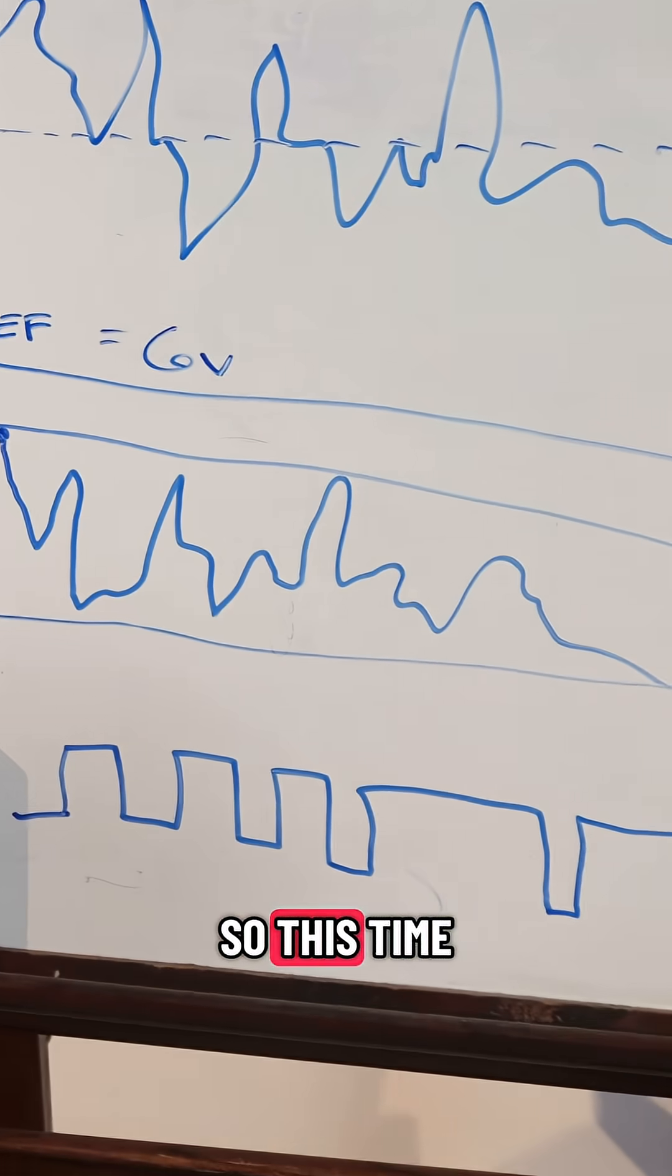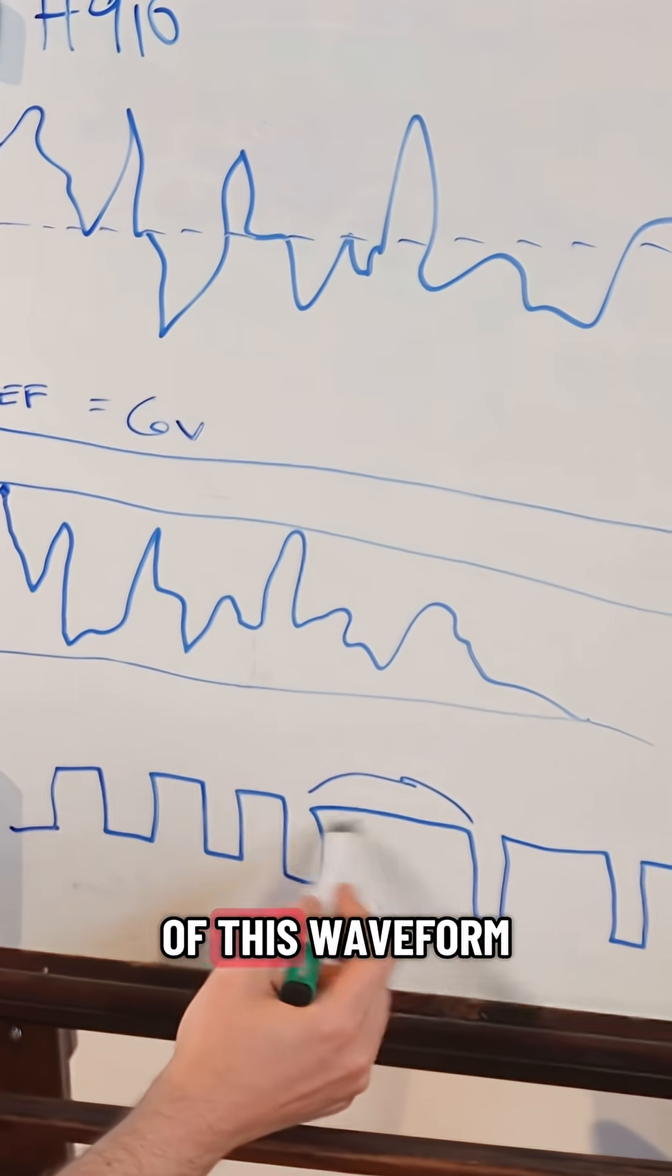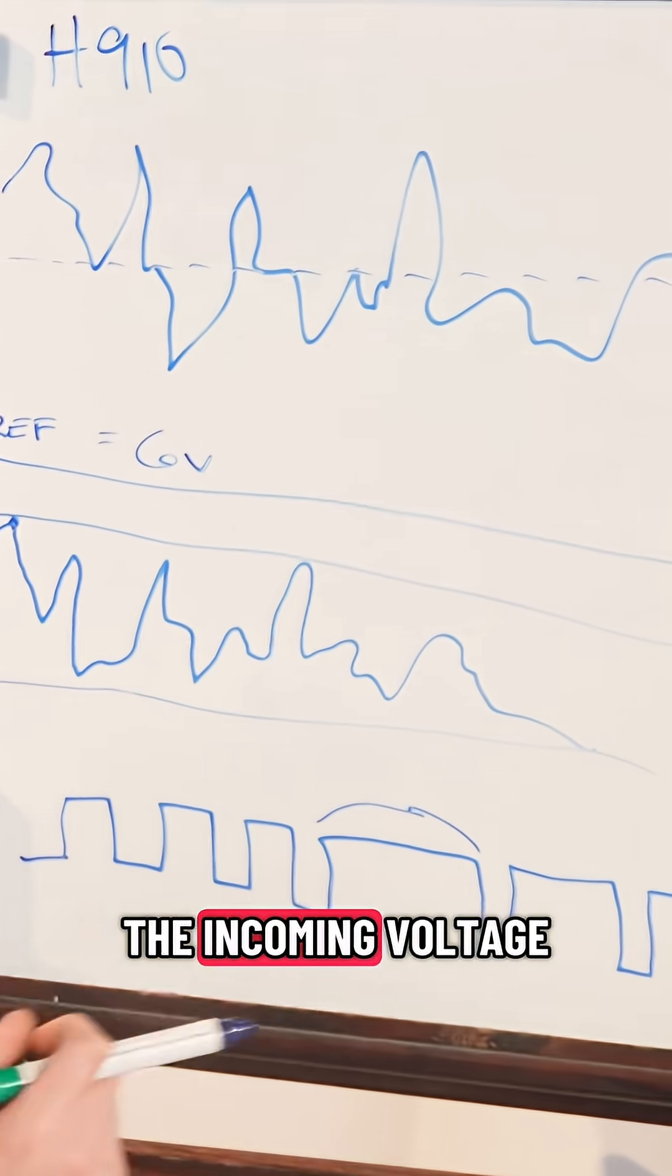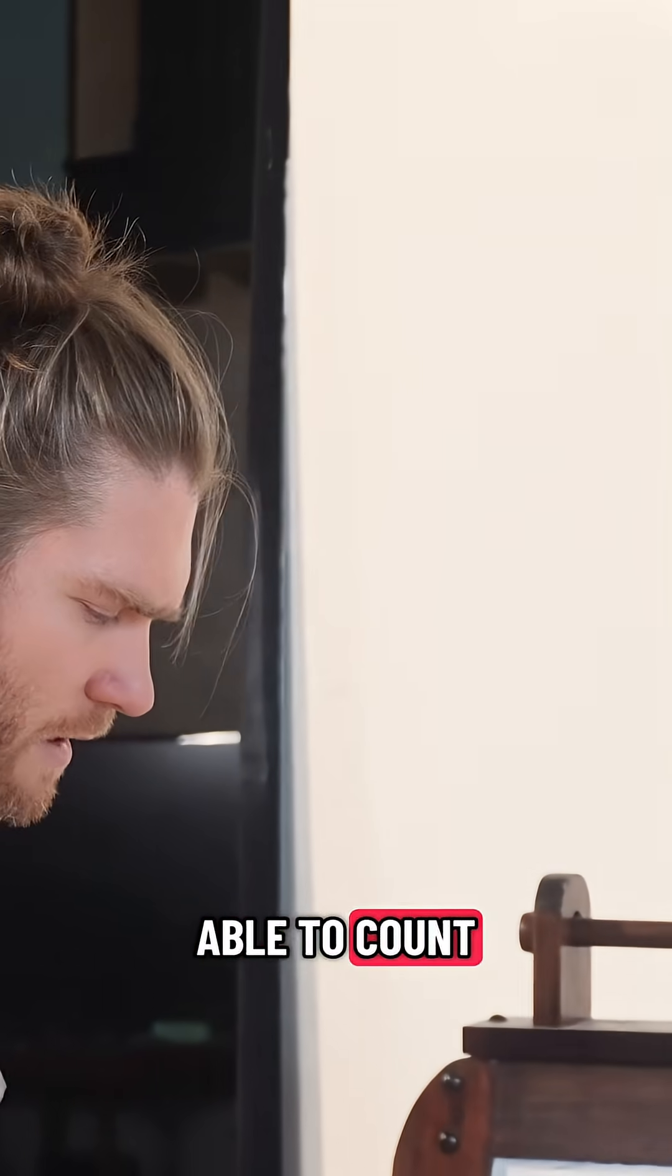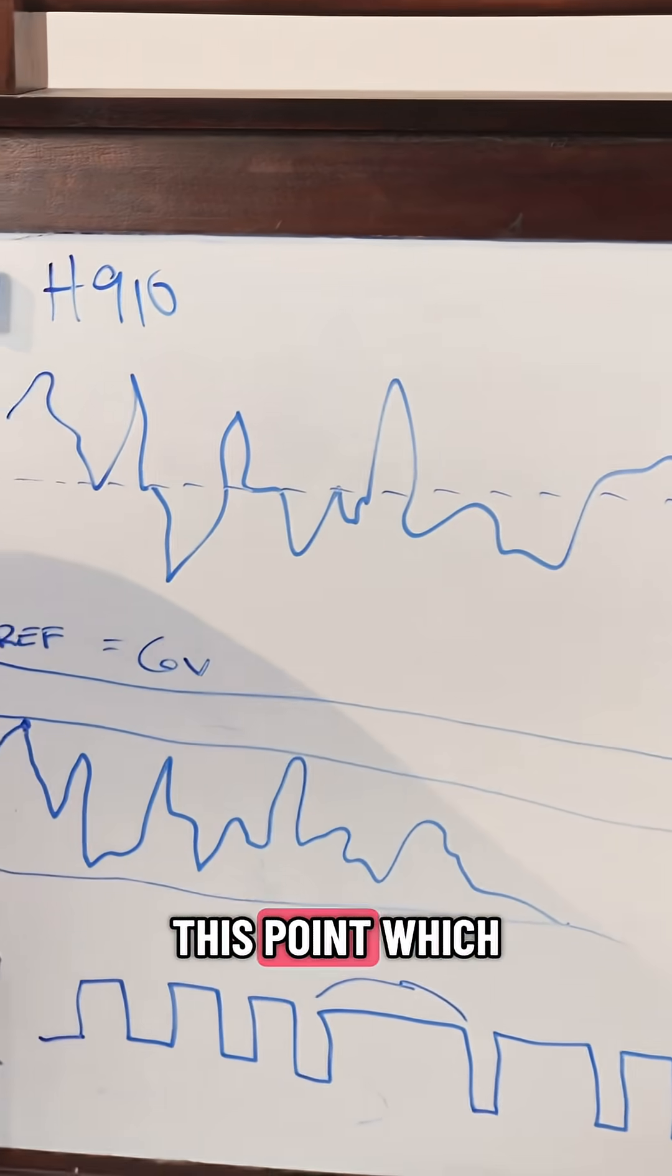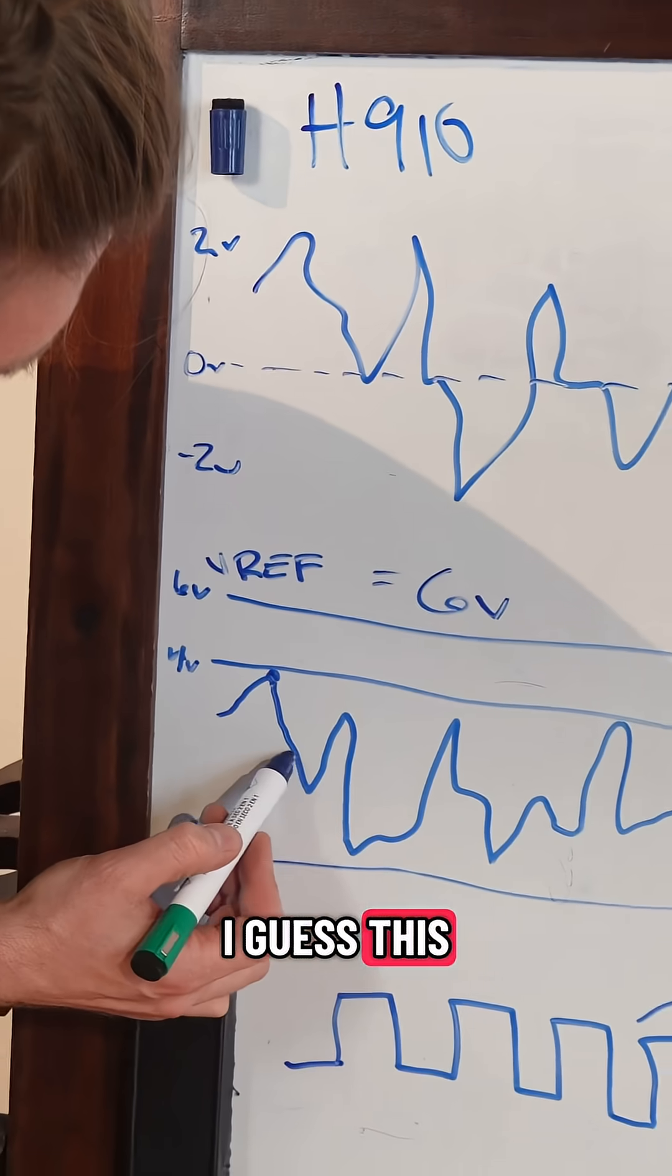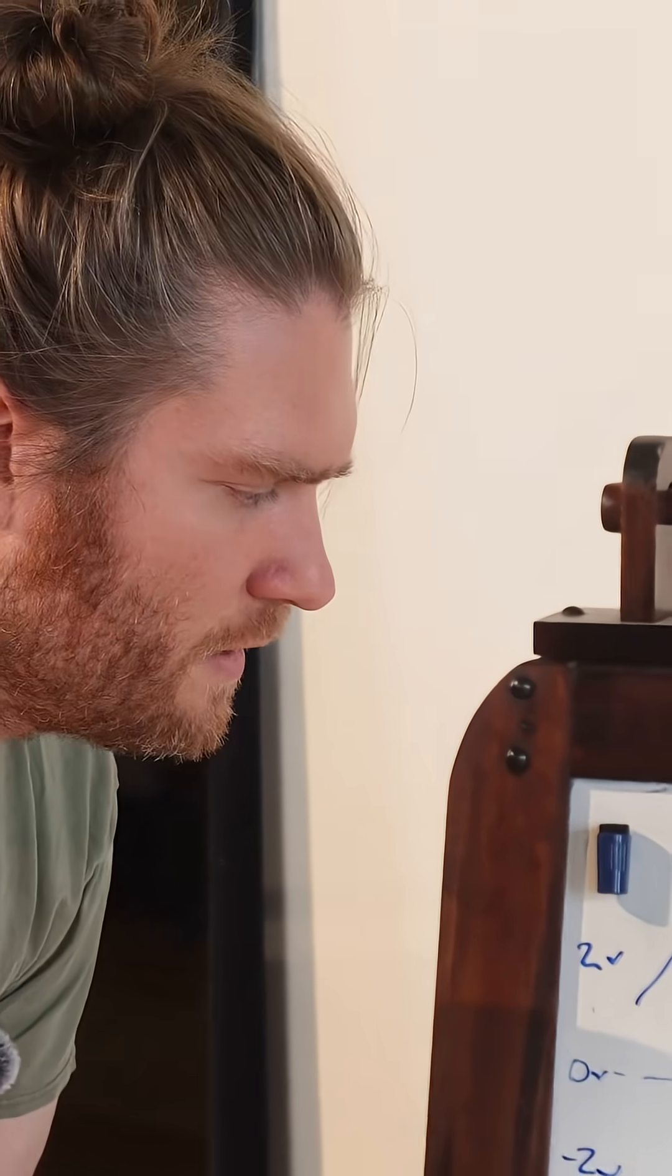So this time right here, the pulse width of this waveform is equal to the incoming voltage of four volts. Our counter is able to count up to 666 from this point right here to this point, which is zero or two volts. This point right here, it would count up to about 333, roughly.